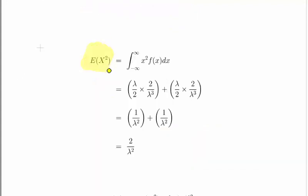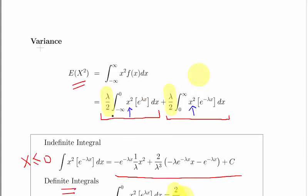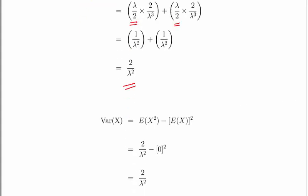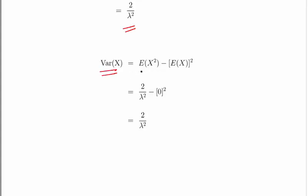Now let's calculate the expected value of x squared. We have the definite integrals, but we have to pre-multiply them by lambda over 2 — we took it out earlier, so don't forget to put it back in. Lambda over 2 times 2 over lambda cubed in both cases gives 1 over lambda squared plus 1 over lambda squared, so the expected value of x squared is 2 over lambda squared. The variance is then E[X²] minus (E[X])² — since E[X] = 0, it equals 0 squared. So the variance is 2 over lambda squared. That is the answer.